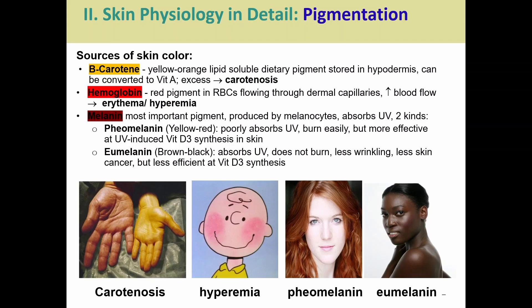Skin color and pigmentation comes from a combination of different pigments. One is beta-carotene — a yellow-orange lipid-soluble pigment found in things like carrots, converted to vitamin A and normally stored in the hypodermis. If someone over-consumes vitamin A, this can lead to carotenosis — a yellowing of the skin. This is not the same as jaundice; jaundice is a buildup of bilirubin, whereas carotenosis is a buildup of beta-carotenes. Hemoglobin, the red pigment in red blood cells, flows through dermal capillaries; increased blood flow can cause erythema or hyperemia — that flushed, red look in the face.